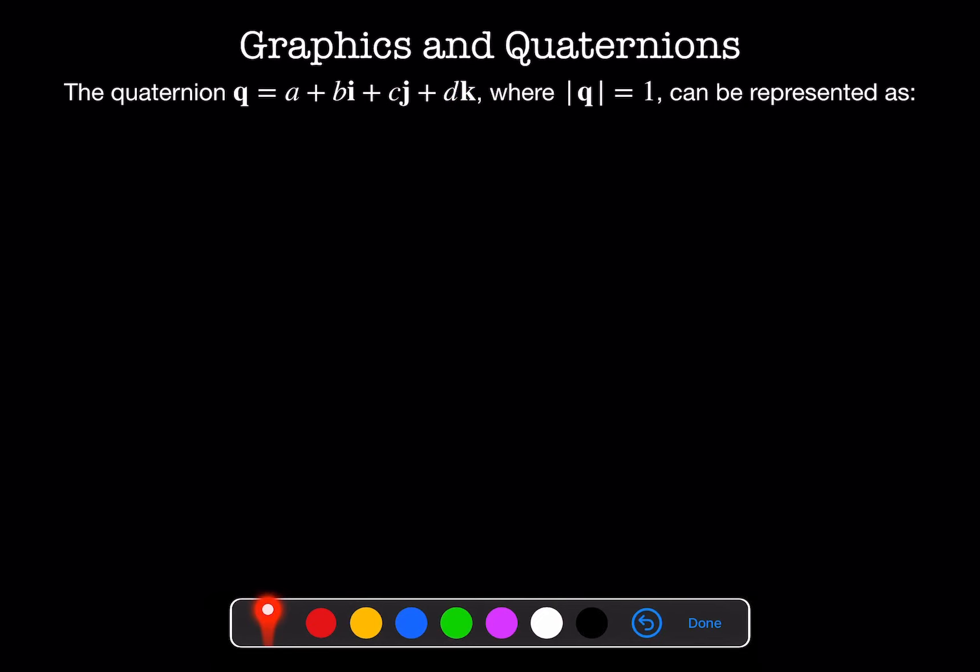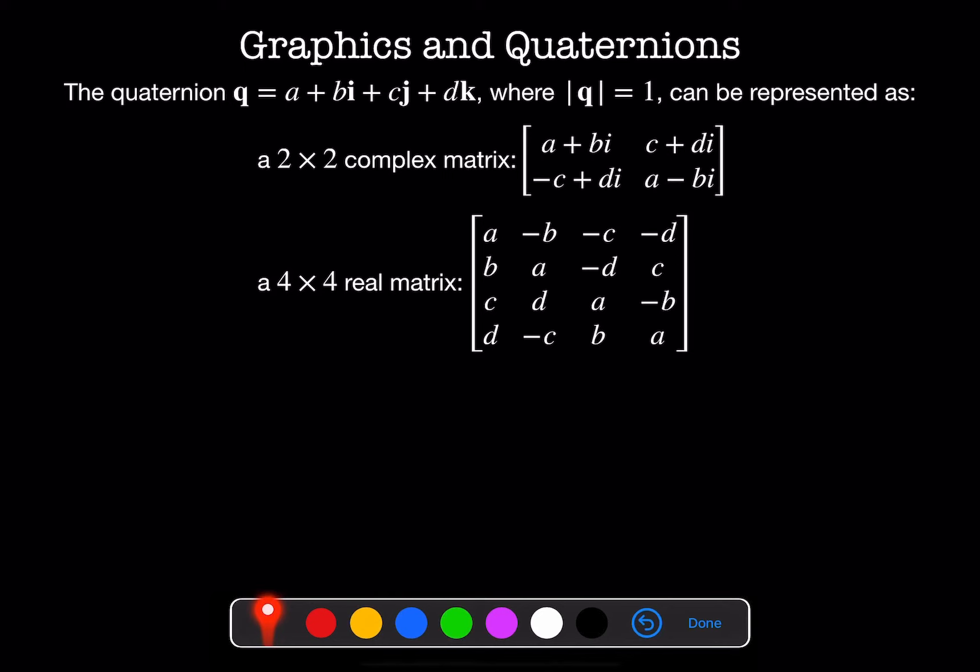We can express quaternions in this sort of complex notation where i, j, and k are complex numbers, or we can look at them as a group. The unit quaternion a plus bi plus cj plus dk, where the magnitude of q is equal to 1, can be represented as this 2x2 complex matrix: a plus bi, c plus di, minus c plus di, and a minus bi. Or equivalently, it can be written as a 4x4 real matrix with elements a, minus b, minus c, minus d in the first row, b, a, minus d, minus c in the second row, c, d, a, minus b in the third row, and d, minus c, b, a in the fourth row.